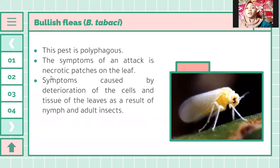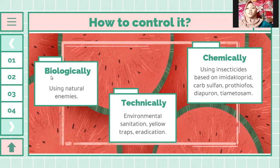The next pest is whitefly, or Bemisia tabaci. This pest is a vector of virus. The symptoms of an attack are necrotic patches on the leaf, caused by deterioration of the cells and tissue of the leaves as a result of nymph and adult insects feeding. How to control it: first, biological method using natural enemies; second, technical method by environmental sanitation, yellow traps, or eradication; and third, chemical method using insecticides based on imidacloprid, carbosulfan, profenofos, diafuron, and dimethoate.